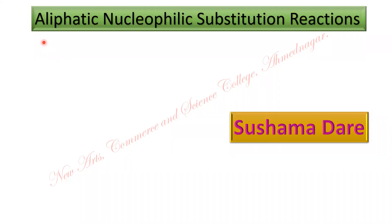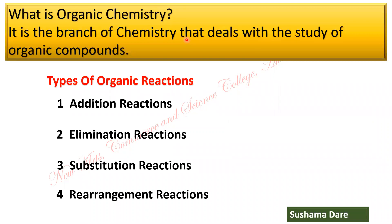Dear student, today I am going to discuss about the aliphatic nucleophilic substitution reactions. First of all, what is organic chemistry? It is the branch of chemistry that deals with the study of organic compounds. Now what are the different types of organic reactions? Addition reaction, elimination reaction, substitution reaction, and rearrangement reaction — there are four types of organic reactions.